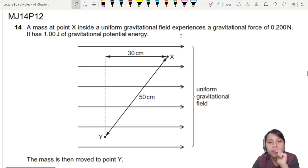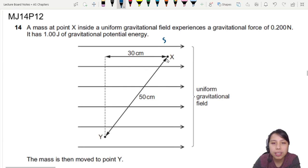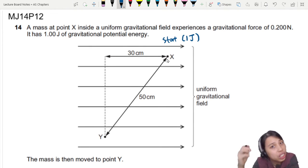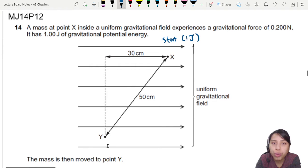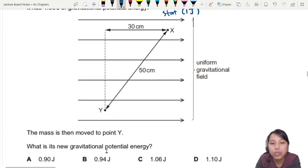At position where? X. Alright, so we kind of start here at position X. And you already have 1 joule of energy at that position. The mass is then moved to point Y. So from here, we move all the way to here. What is the new GPE?